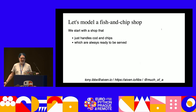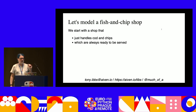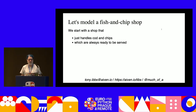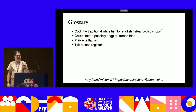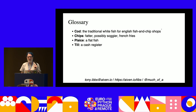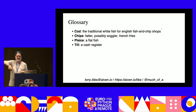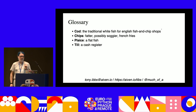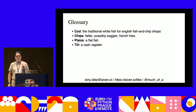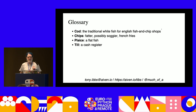We're going to model a fish and chip shop. I have a colleague who talks about Kafka in terms of pizza restaurants, but he's from Italy - I come from the UK, our food is greasier. Cod is the traditional white fish served in English fish and chip shops, dunked in batter and shoved into hot fat until cooked. Chips are like French fries but fatter and soggier. Plaice is another fish - a flat fish. And by till I mean cash register.